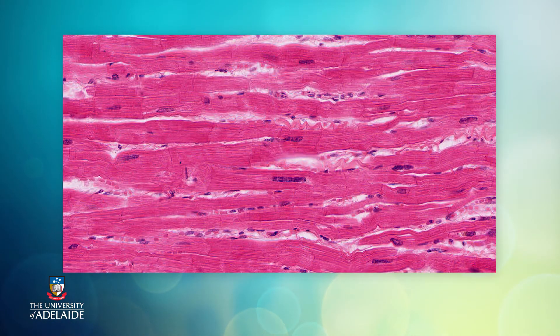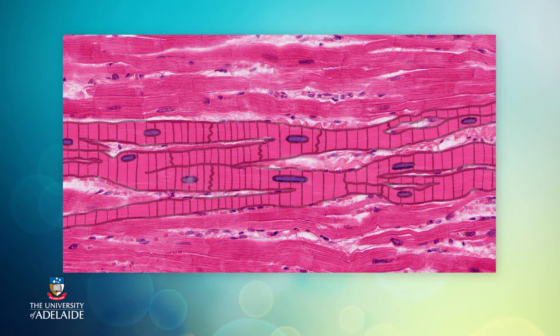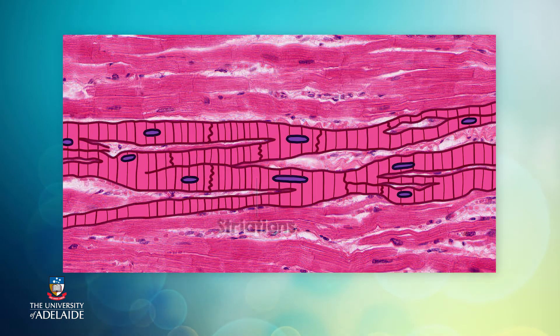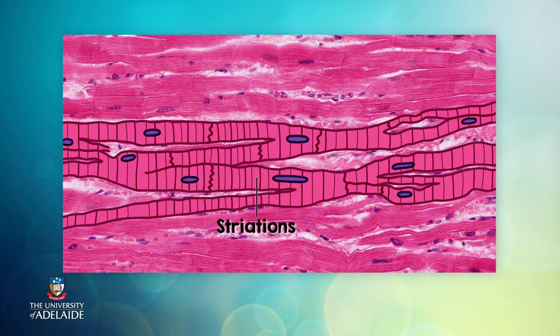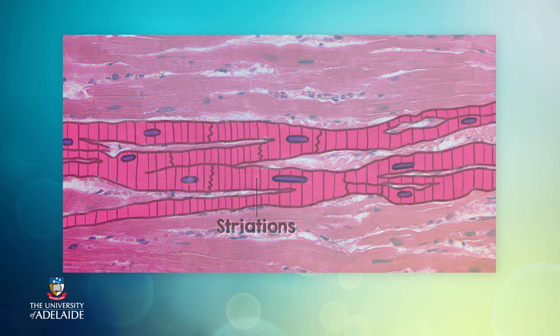Under a microscope we can see that cardiac muscle cells have a similar striated appearance to skeletal muscle, which means that they have that regular stacking of their actin and myosin filaments.